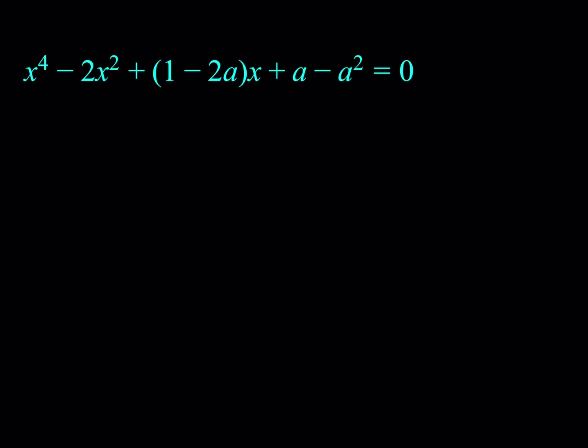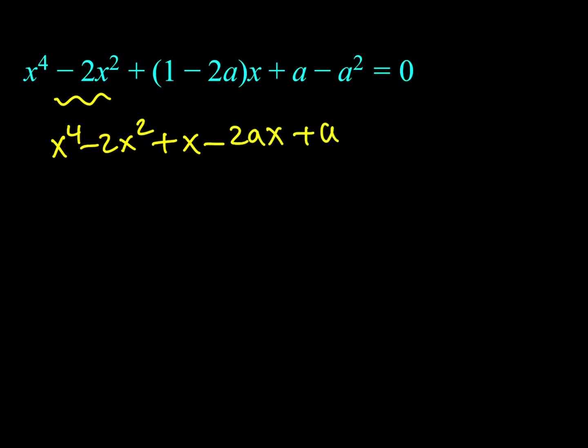The plan is to show you two methods to solve this problem. For the first method, I'd like to expand the equation as much as I can. So we get: x to the fourth minus 2x squared plus x minus 2ax plus a minus a squared equals 0.